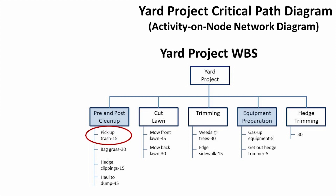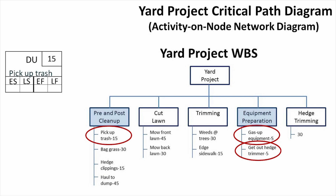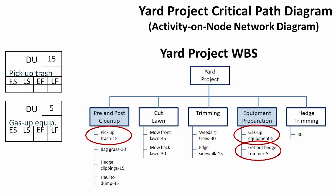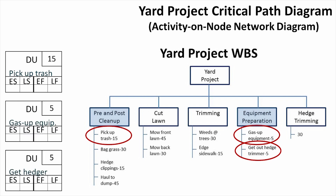We see that we've got to pick up the trash first, we've also got to gas up our equipment, and then we need to get our hedge trimmer out. These are the first three tasks or subtasks that we can do, and we can do them in parallel. I list these side by side on my activity-on-node network diagram, and this is ultimately going to determine our critical path — so I've called this the critical path diagram.